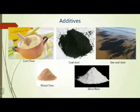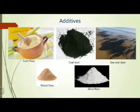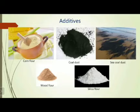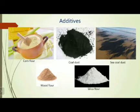These are the additives — we add them according to our requirement to improve or enhance the properties of the molding sand. We add a certain percentage of additives: one is corn flour, second is coal dust — also called sea coal dust. You can find sea coal dust in coastal areas.